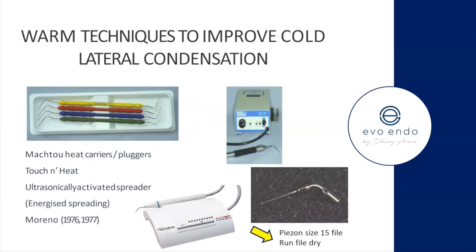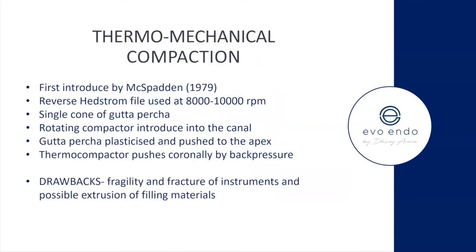Warm or hot obturation techniques can be used to improve lateral condensation, including heated tuggers, touching heat systems, and ultrasonically activated spreaders. Some will use thermomechanical compaction — you introduce a single cone of GP into the canal, put a Gutta condenser or compactor in, the GP becomes plasticized by heat and friction, pushes toward the apex, and the thermocompactor pushes coronally by back pressure.